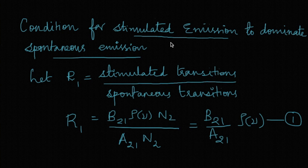On to the condition for stimulated emission to dominate over spontaneous emission. Let us take R1 as a ratio between stimulated transitions to spontaneous transitions. We have already seen the rate equations as stimulated transition can be written as B21 ρ(ν) N2 divided by spontaneous transitions which can be represented by A21 N2. Dividing these two, N2 and N2 get cancelled and we have B21 by A21 into ρ(ν) - equation 1. That will give the ratio between the stimulated transition to spontaneous transitions.